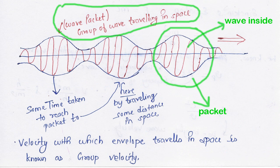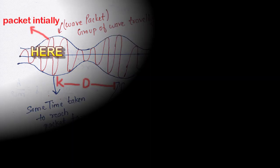To understand this better, let's look at a diagram. In the diagram, we have a wave packet. Inside this wave packet, there is a group of waves traveling at different frequencies and velocities. But if we look at the direction of propagation of the packet, it is from left to right.